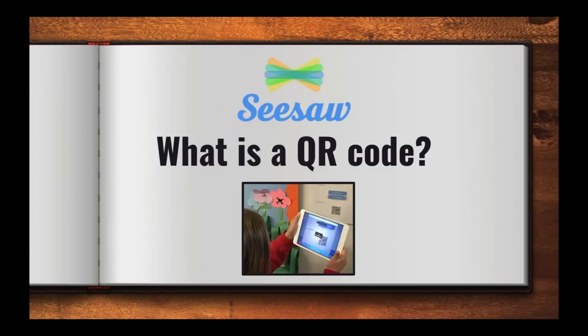Let's talk tonight about QR codes. Before we get too far into the topic, I want to make sure everybody knows what a QR code is. You can actually see one in that picture — it's hanging on the wall as a poster and a student is scanning it with an iPad. A QR code is a matrix barcode that can be scanned electronically, oftentimes with a mobile device like a smartphone or tablet, and when a person scans it, that reveals more information. Seesaw uses QR codes in unique ways, and tonight we want to talk about ways you can use the QR codes generated by Seesaw.